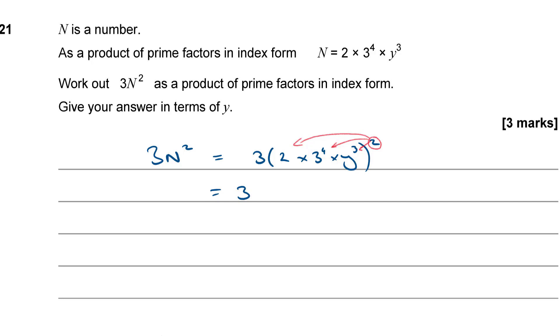So, that's going to give me 3 lots of 2 squared, well, it's going to be 2 squared because we're going to leave it in index form, times 3 to the 4 squared. When you have an index of an index, you multiply the indices together. So, that's going to give me 3 to the 8 and then times y cubed all squared. 3 times 2 is 6, so that's going to give me y to the power of 6.